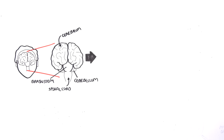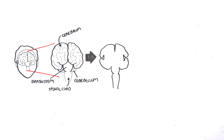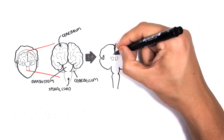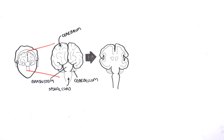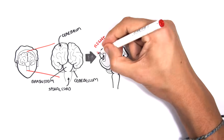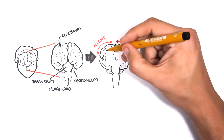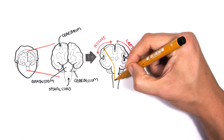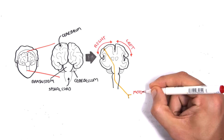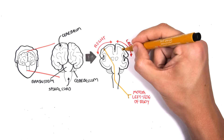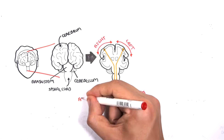If we cut a cross section of the brain and look at it from the front, we can see the motor cortex — the area of the cerebrum which helps initiate voluntary movement. Here is the right motor cortex and here is the left. Neurons arising from the right will travel down the spinal cord and send motor information to the left side of the body. Similarly, neurons arising from the left motor cortex will cross over, supplying the right side of the body.